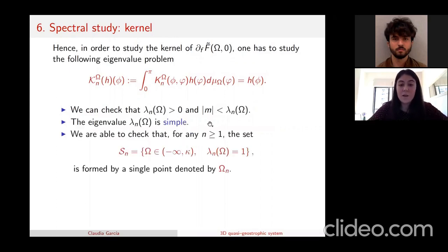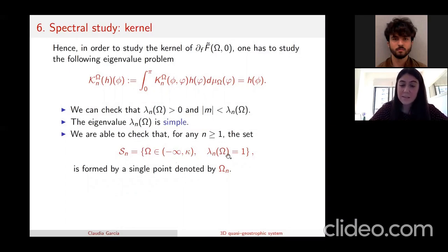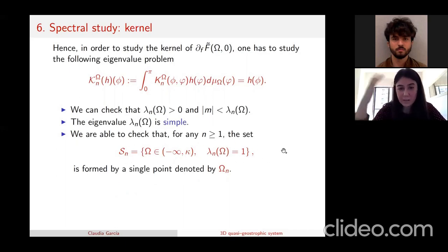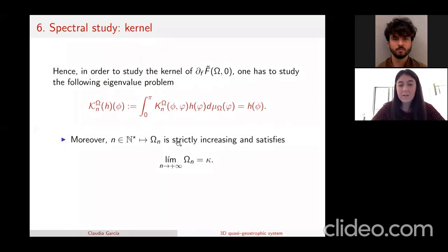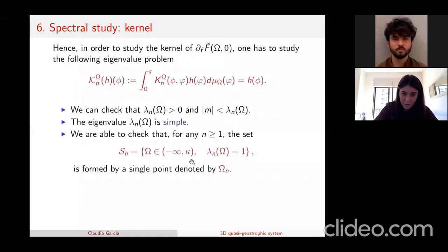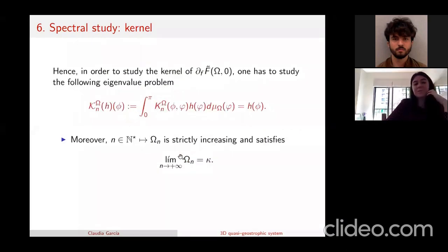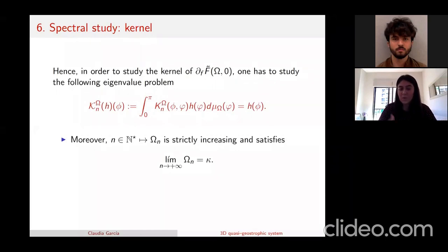We can do this because the largest eigenvalue lambda_n is positive and simple. Defining the set S_m as the collection of omega in (minus infinity, kappa) such that lambda_n(omega) equals one, we can check that this set is formed by a single point, which we denote omega_n. Moreover, omega_n is increasing in n and its limit is kappa, the boundary of the interval of definition.